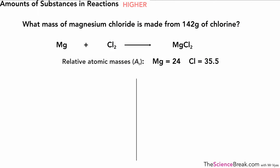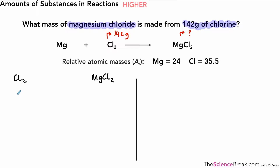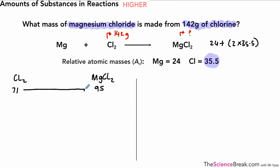So let's take a look at some examples. The first example asks: what mass of magnesium chloride is made from 142 grams of chlorine? A balanced equation is given. We want to know the mass of magnesium chloride and we know the mass of chlorine — 142 grams. We can ignore the magnesium in this equation and just work with the two compounds the question is asking about. The first way to do this is to use ratios. The formula mass for chlorine is 71 (2 × 35.5), and for magnesium chloride it's 24 + 2 × 35.5 = 95. So 71 grams of chlorine would make 95 grams of magnesium chloride.